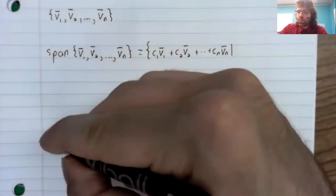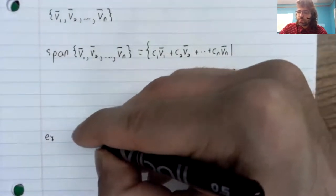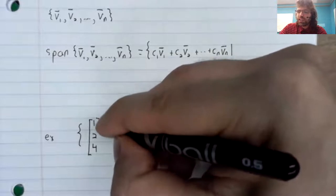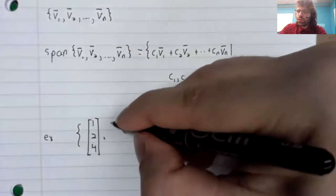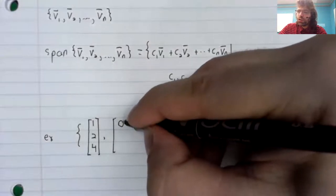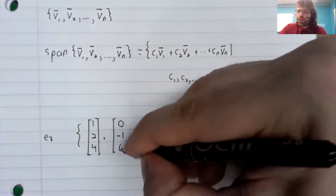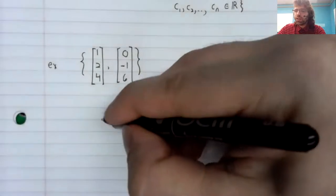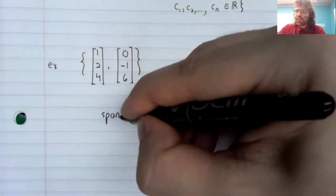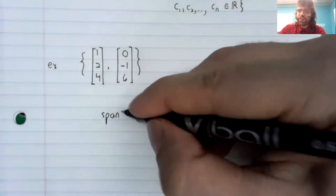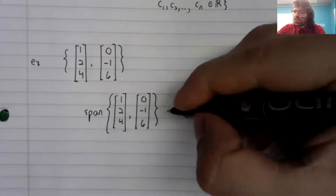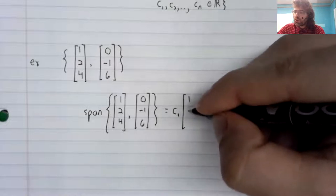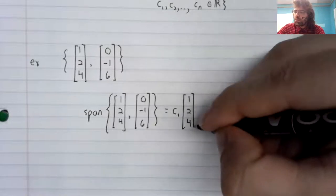For example, say you have two vectors in R3: [1, 2, 4] and [0, -1, 6]. Then the span of these two vectors is the set of all their linear combinations.